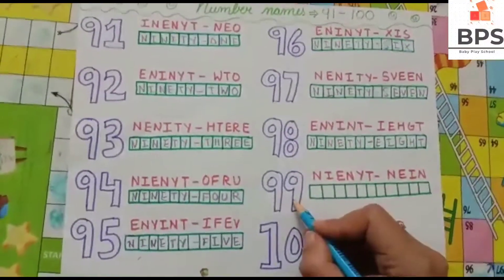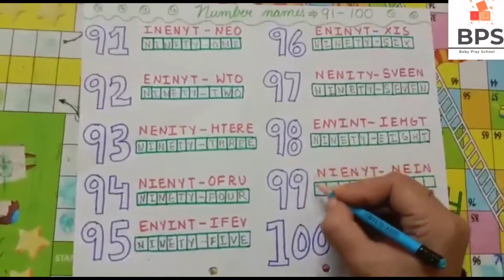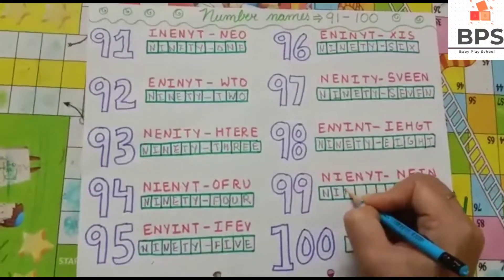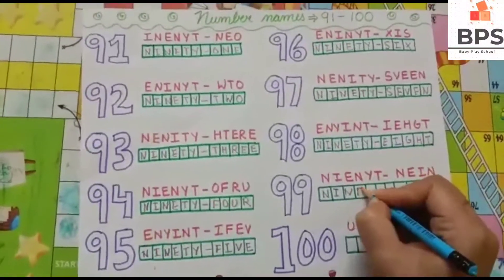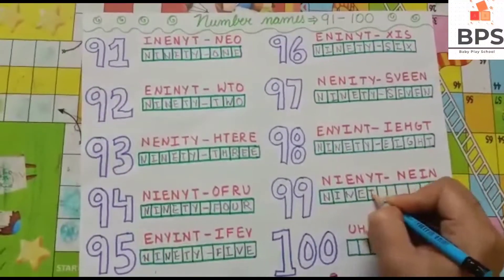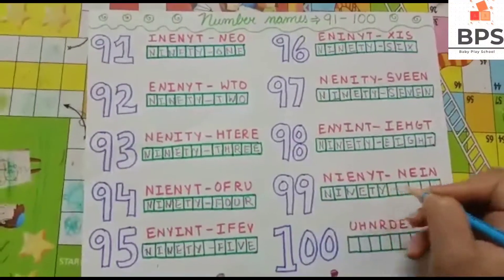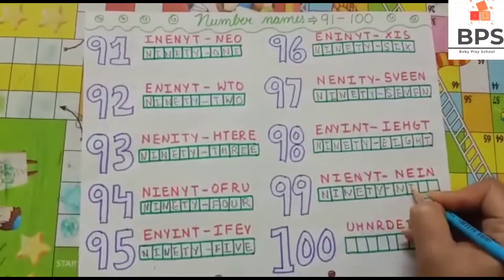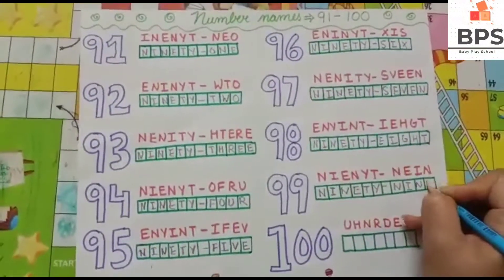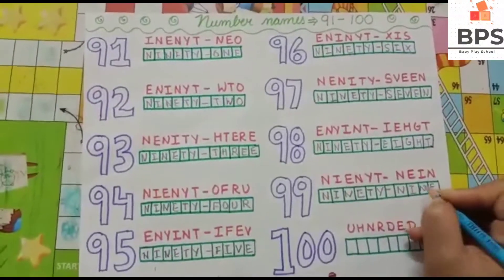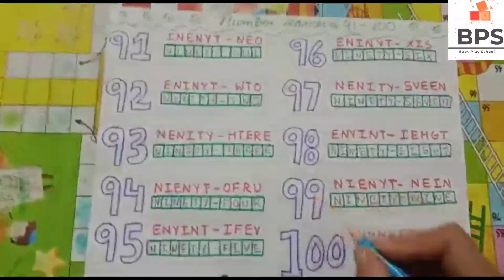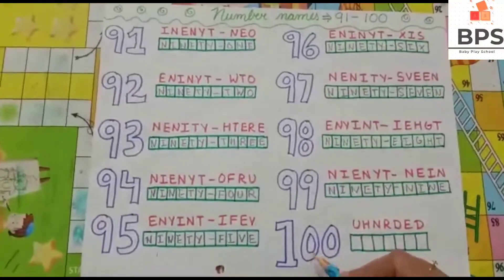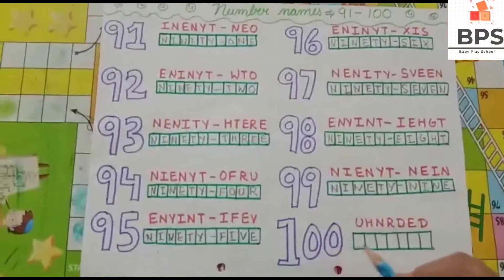9, 9, 99 — N-I-N-E-T-Y, 90, N-I-N-E, 9, so 99. Then the last number is 1, 0, 0, 100.